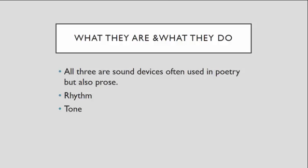They serve the same purpose whether you're talking about poetry or prose. They create a rhythm, and they can also create tone or mood in some cases, depending on what sounds are associated with what letters. For example, a lot of O sounds make things feel kind of old and mysterious — that's how sound manipulates us into understanding a text.